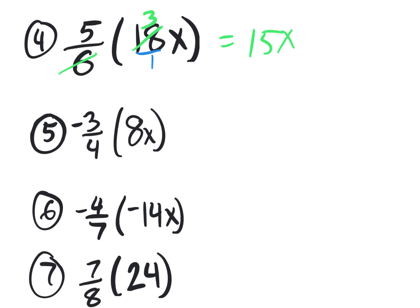Once you do these so many times, you're going to start being able to do this in your head. The reality is five sixths is really five divided by six, so there's a division of six right here. If 18 is divisible by six, you could do that in your head and get three, then five times three is 15x. Similarly, three fourths means negative three divided by four — if the number is divisible by four, you could do it in your head.